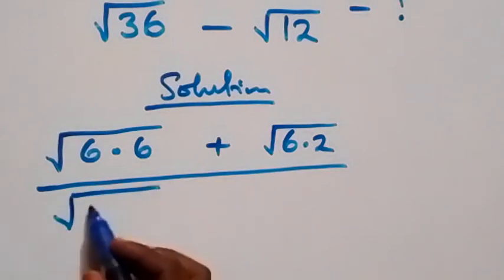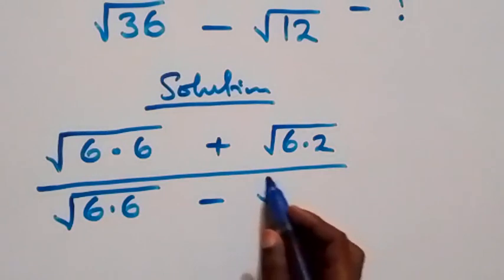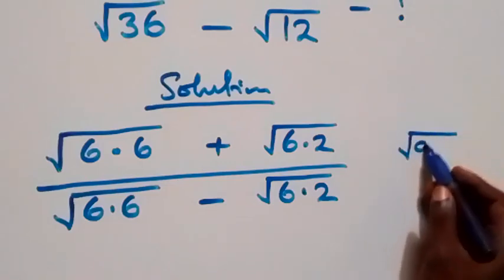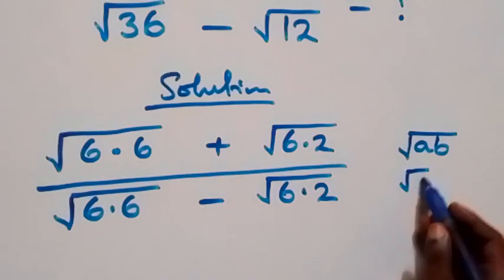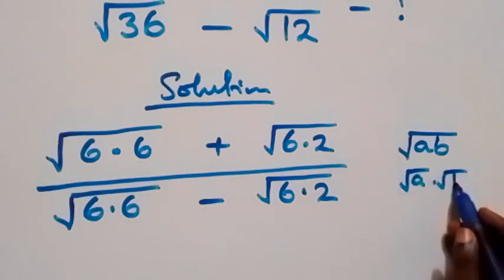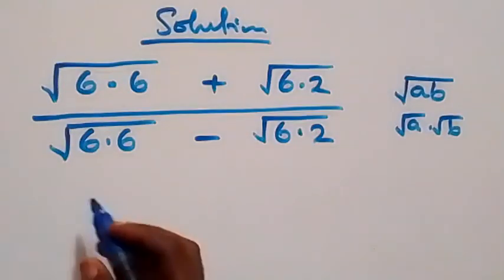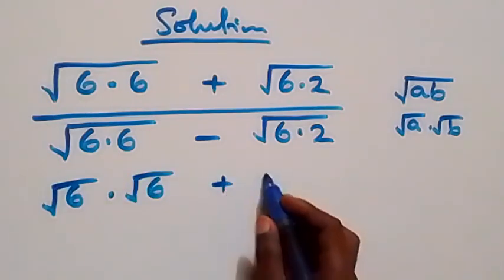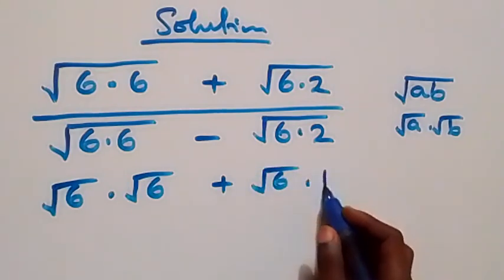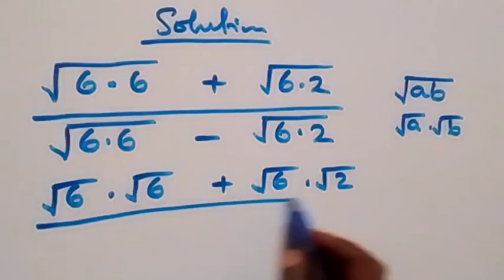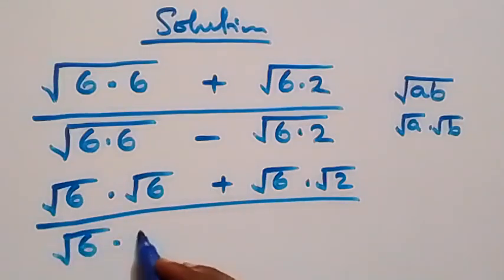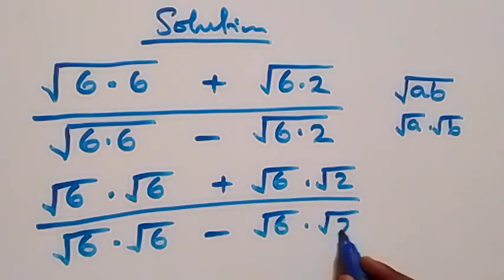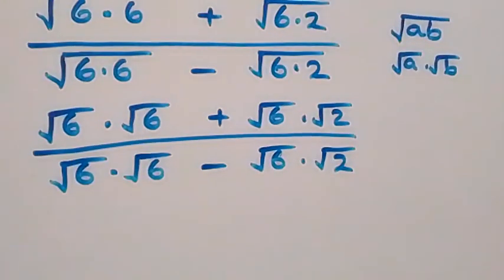We also write the denominator as root of 6 times 6, minus root of 6 times 2. We recall that root of (a times b) can be written as root a times root b. Applying this, the numerator becomes root 6 times root 6 plus root 6 times root 2, and the denominator becomes root 6 times root 6 minus root 6 times root 2.